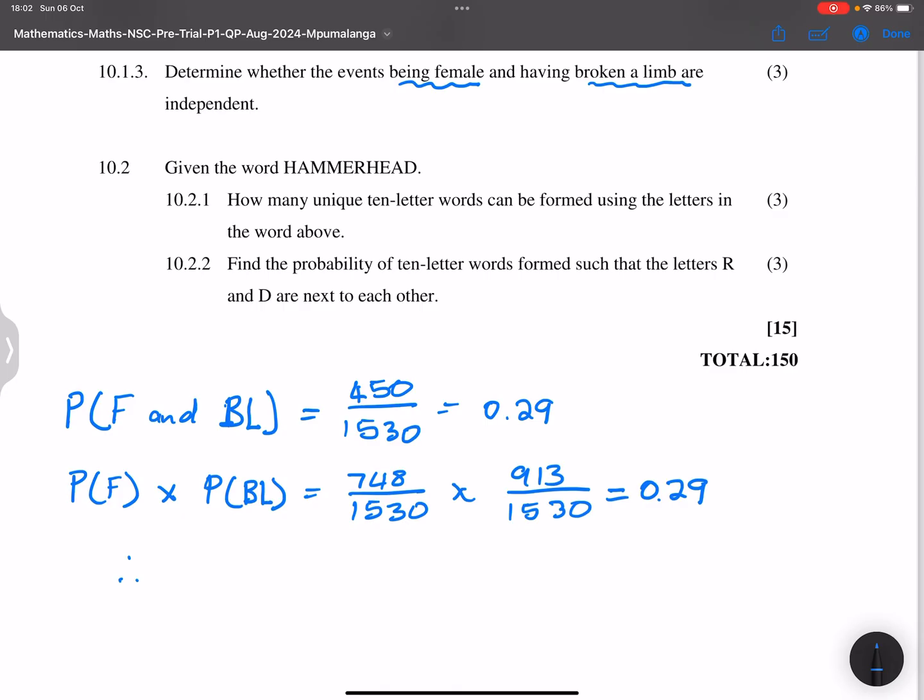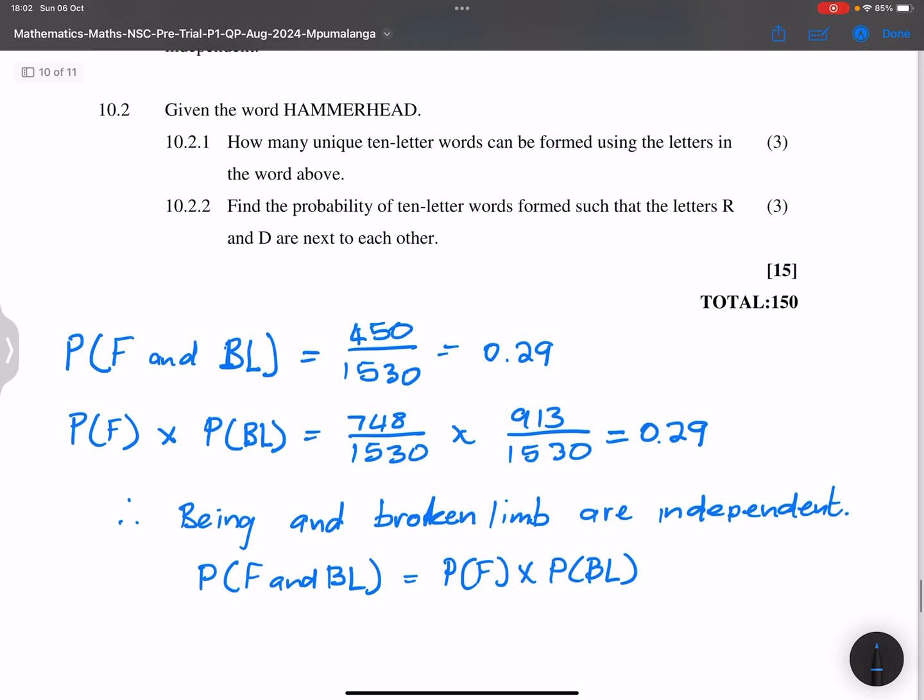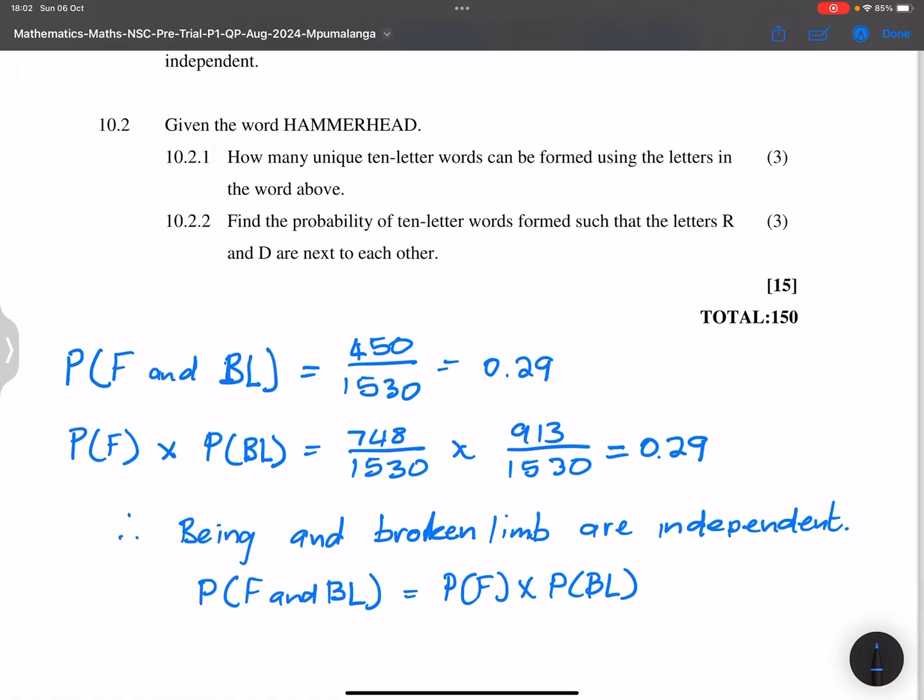So therefore, being female and having a broken limb are independent. Why is that? Because the probability of being female having a broken limb is equal to the probability of being female multiplied by the probability of having a broken limb. And ladies and gents, that is truly how you are going to answer that question. I hope that makes sense to you.